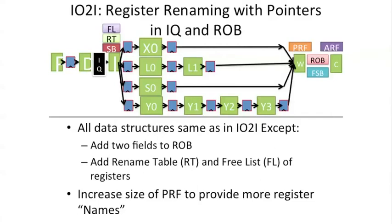Let's take a look at what we have to add to our pipeline. We have our in-order fetch, out-of-order issue, out-of-order write-back, and in-order commit processor that we had before. It had variable length pipes, a reorder buffer, a future store buffer, a scoreboard, and an instruction queue — all the structures we talked about last time. Now we're going to add two more structures to it and modify the existing ones slightly.